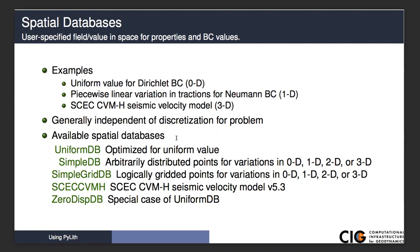Some of the types of spatial databases that are available are the uniform database. This is optimized for a uniform value. We use this quite a bit in the examples. A simple database—this is an arbitrary distribution of points for variations in 0D, 1D, 2D, and 3D. We don't make any assumptions about the topology of these points, whether it's a uniform grid, circular grid, polar coordinates, anything like that, except whether they are either a point, a line on a surface, or distributed in 3D. The disadvantage of not having any assumptions or constraints is that it becomes quite expensive to do queries of the spatial database for very large numbers of points in 2D or 3D.